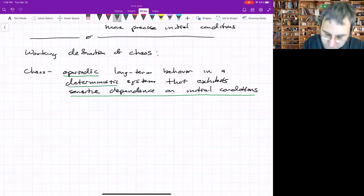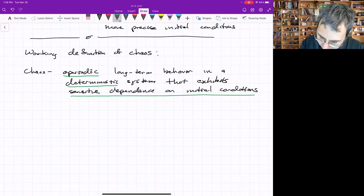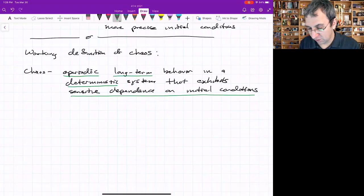It's a deterministic system, meaning it's not driven by noise or stochasticity. And some people might leave this out, but we can put it in there. Long-term, you could have transient chaos. Something might exhibit everything, but just for a short time, and then settle down to behavior that is periodic.